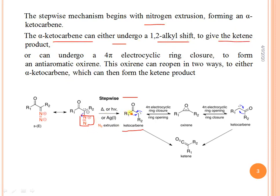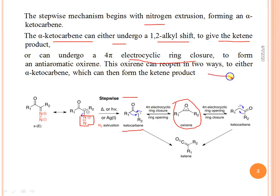In the 1,2-shift, the alkyl group migrates toward the carbene carbon atom, and the ketocarbene gives the ketene product. Alternatively, the ketocarbene can undergo 4π electrocyclic ring closure to form the anti-aromatic oxirene ring system.